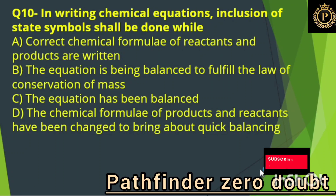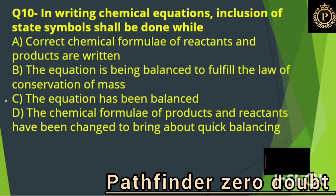In writing a chemical equation, inclusion of state symbols shall be done while: Option C, the equation has been balanced.